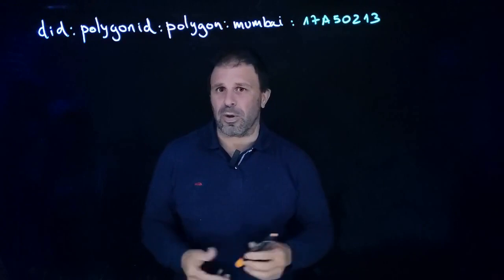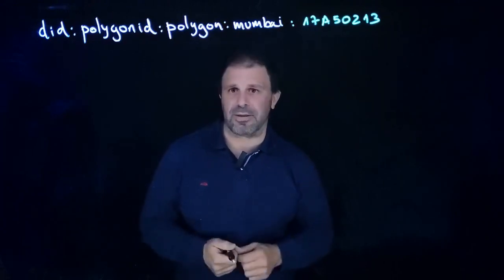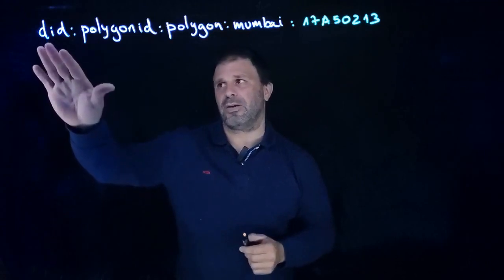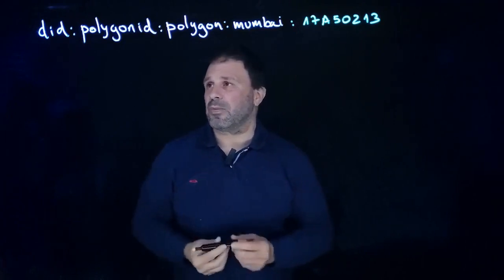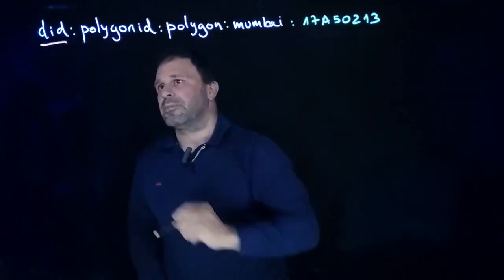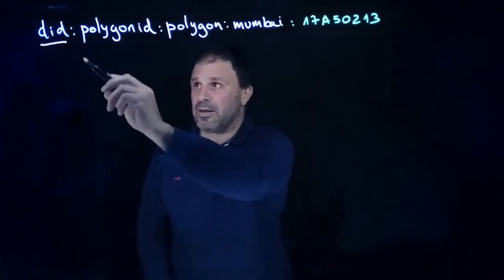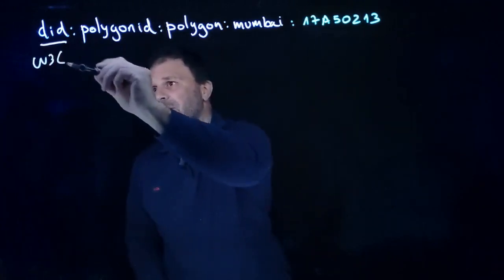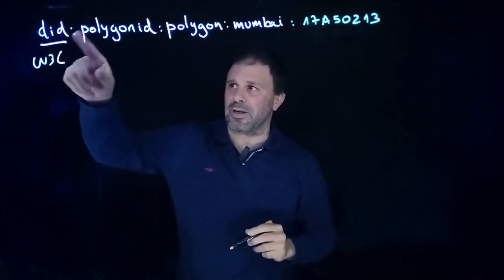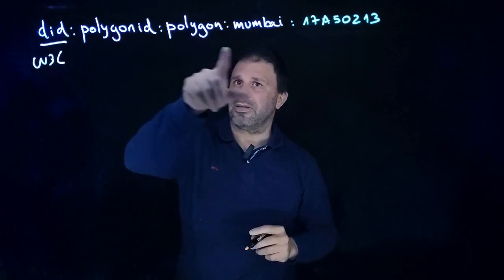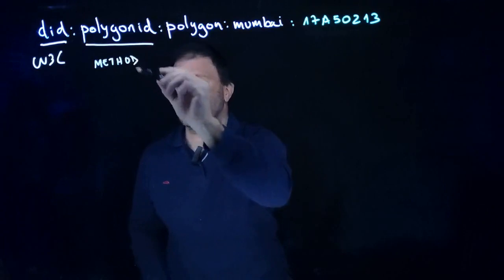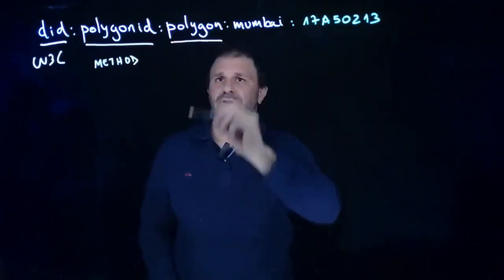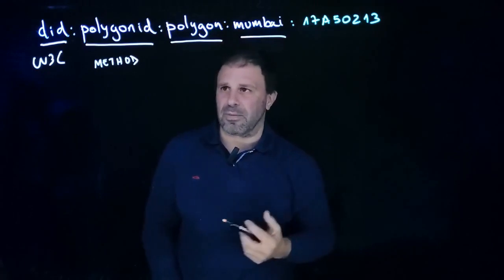Let's talk about identifiers. Imagine that you download a wallet supporting Polygon ID and you create your identity. You will get a unique identifier similar to this one. Your identifier will start with DID, because Polygon ID supports the DID standard sponsored by the W3C. DID stands for Decentralized Identifier. Next, you will see what we call the method — this is our DID method, and then the blockchain and the network where your identity is created.